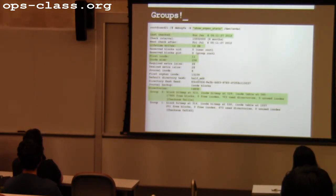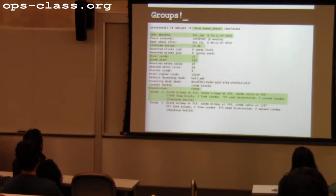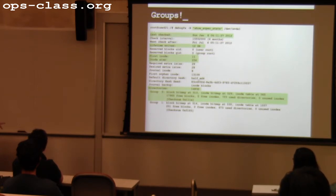This ext4 group layout is a legacy of FFS — the idea that I don't want to put all my inodes in one place on disk but scatter them across the disk. The ext4 block group layout is very, very based on FFS.